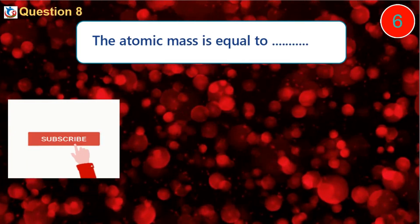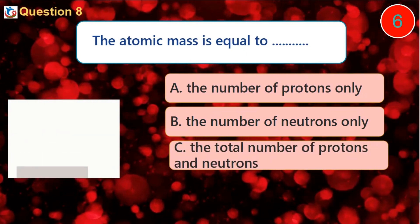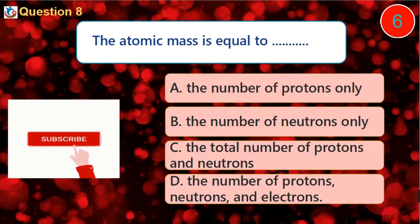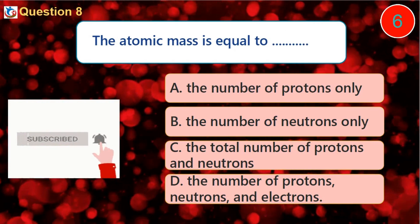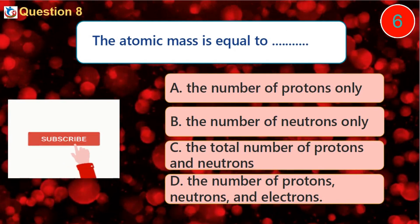Question 8. The atomic mass is equal to: A. The number of protons only B. The number of neutrons only C. The total number of protons and neutrons D. The number of protons, neutrons and electrons